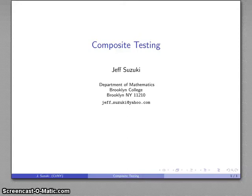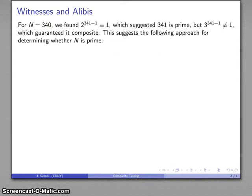This problem of determining whether a number is prime leads to the witness and alibi approach. For example, N = 341: we applied the Euler-Fermat theorem and found 2^340 ≡ 1, which suggests 341 is prime. But when we tried a different base, 3^340 ≢ 1, which guaranteed it was composite.